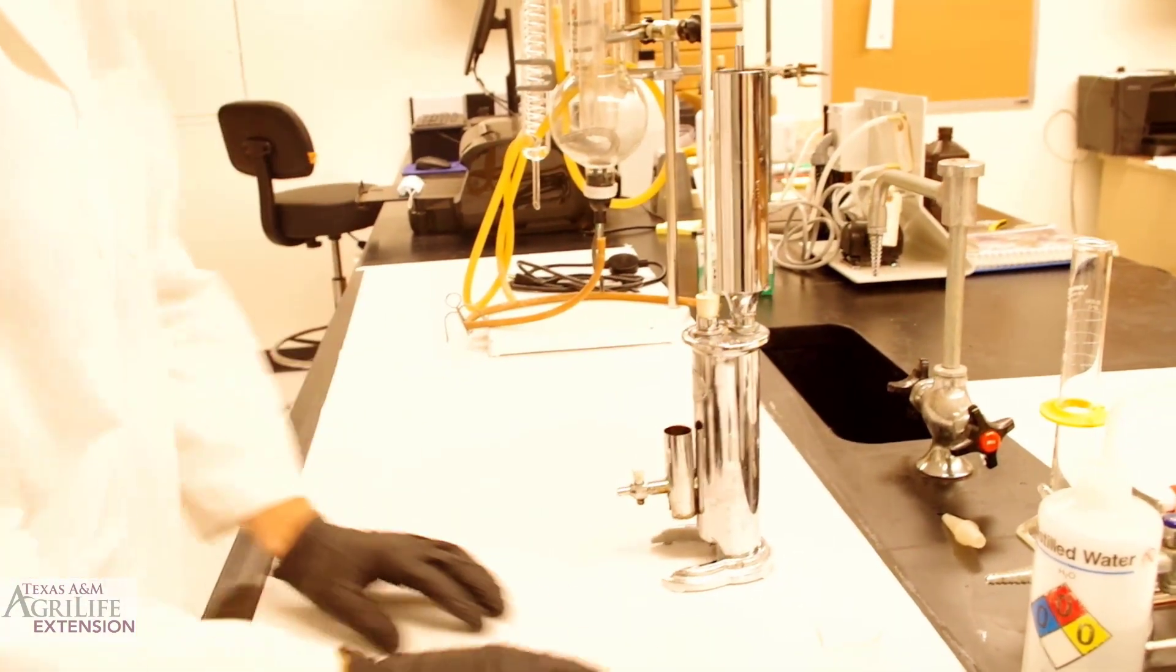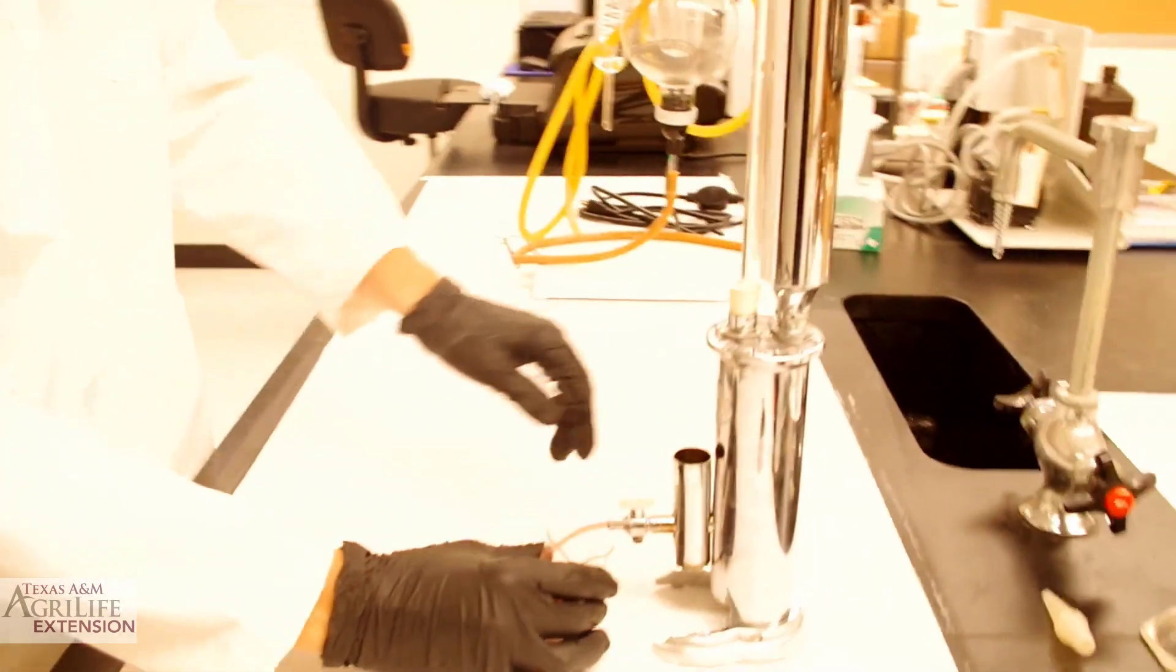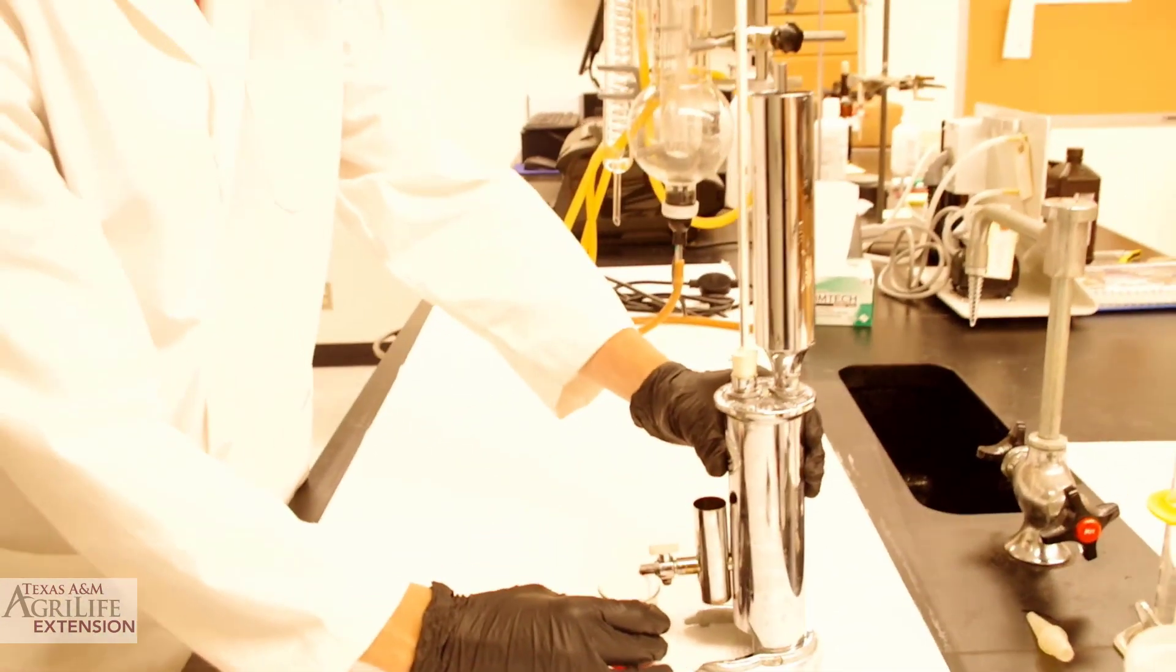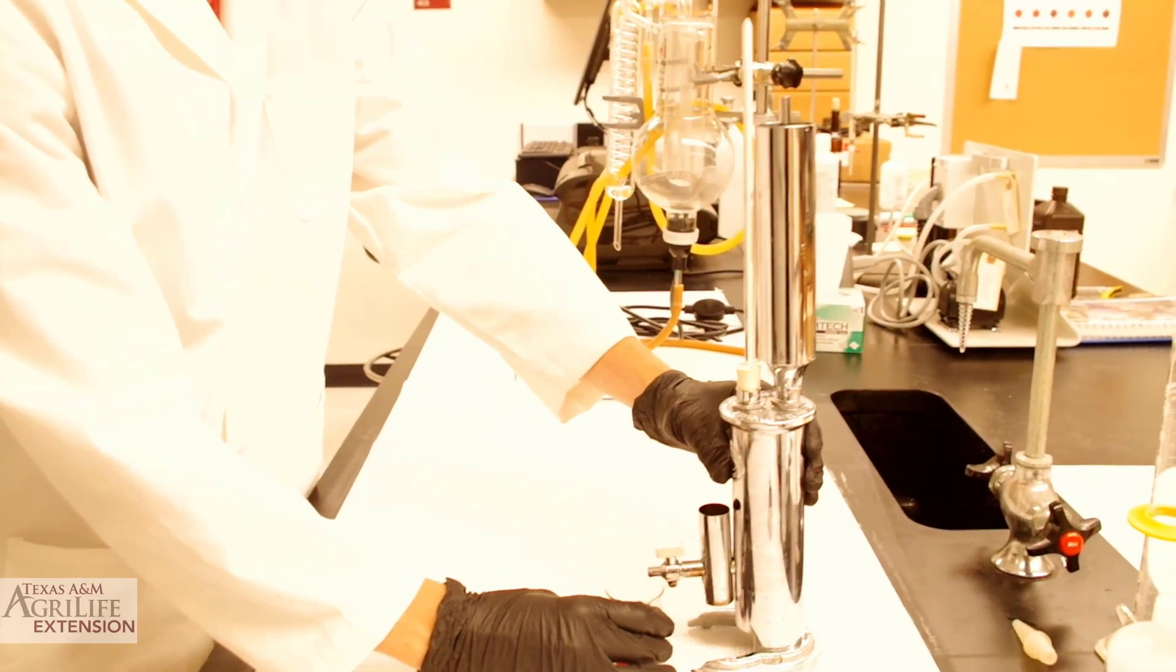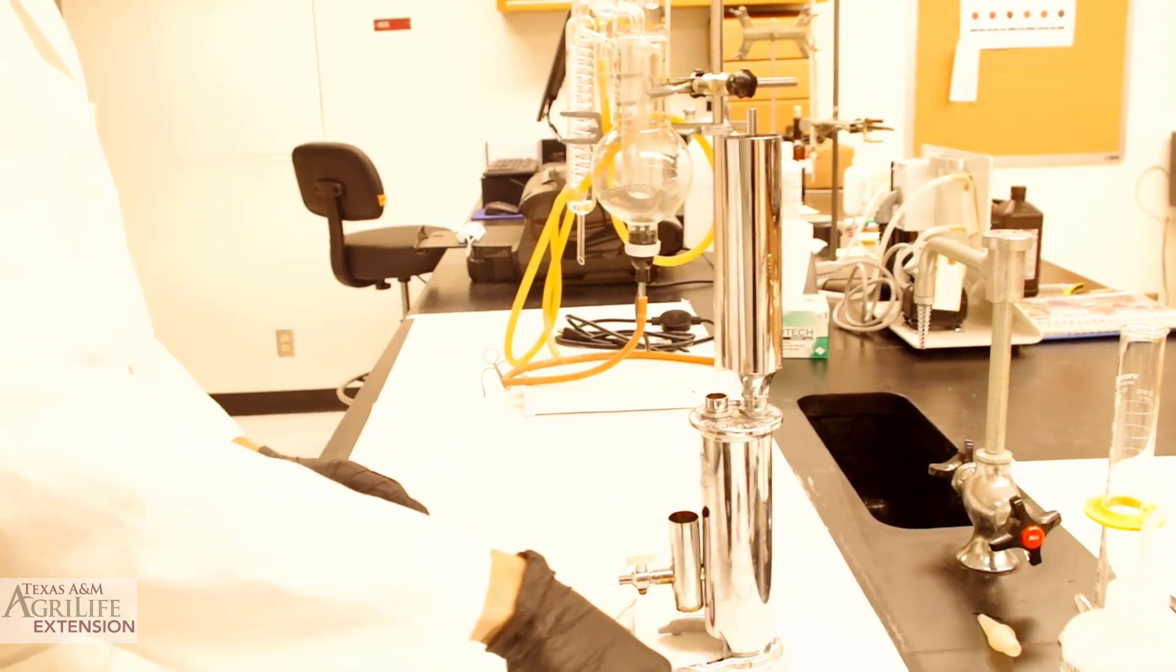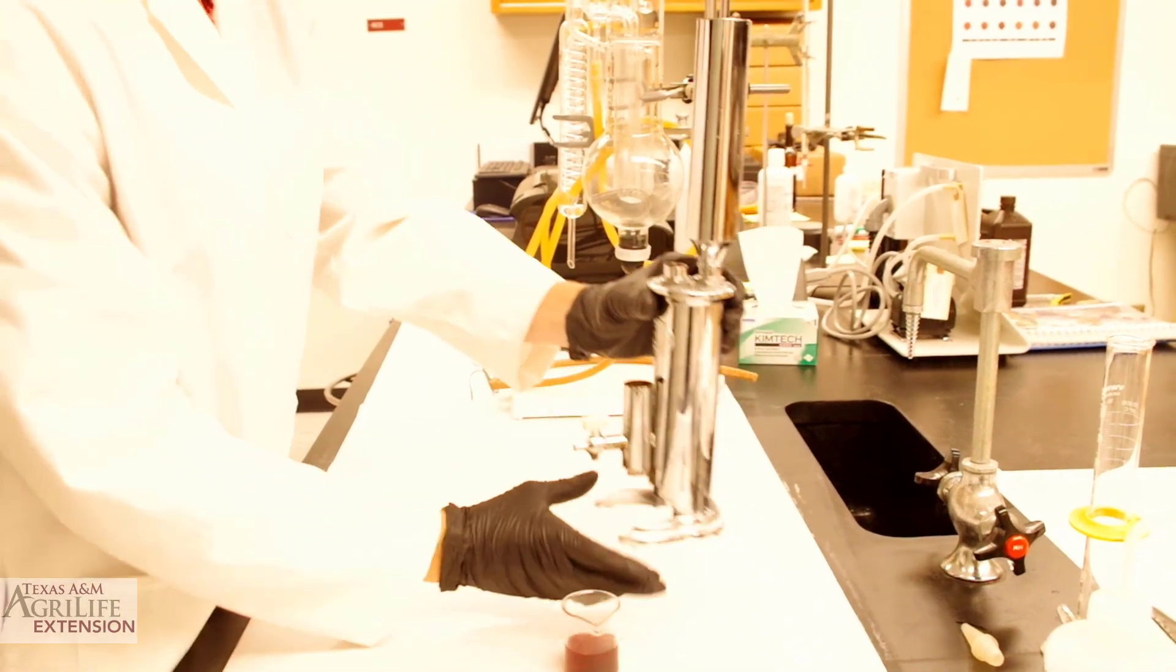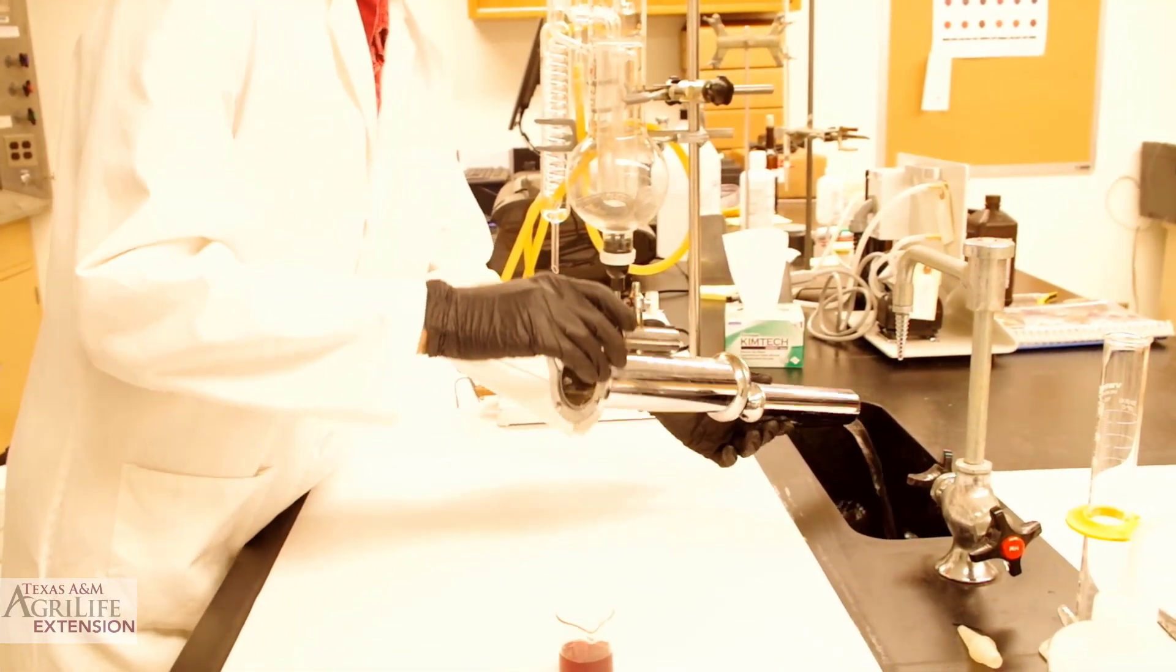First, we turn the burner off. We now can evacuate our sample through the evacuation spout into a waste beaker. Time to remove the thermometer. Carefully drain the cooling water into a sink.